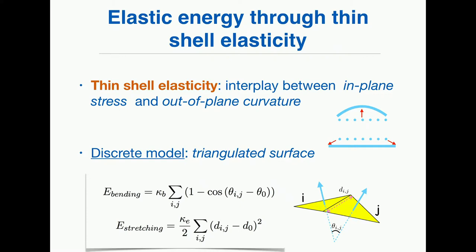With this model, the elasticity is composed of two parts. You will have an in-plane stretching or compression of the proteins in their own plane. And you will have an out-of-plane curvature, which tells you about the local bending of the surface. In the discrete model, bending arrives with a quadratic potential around a preferred angle. This is an important parameter.